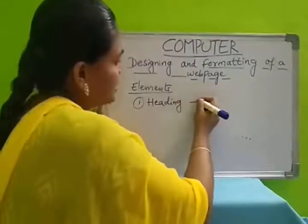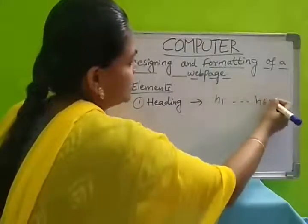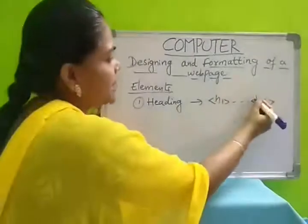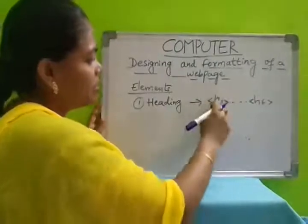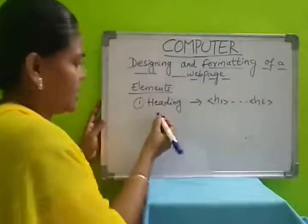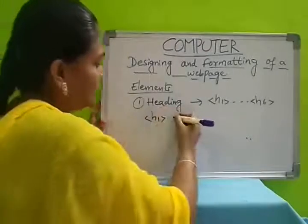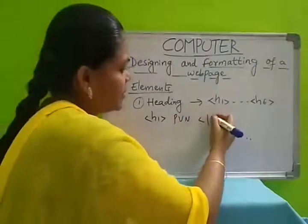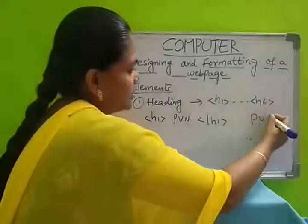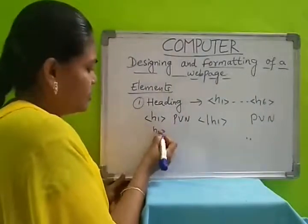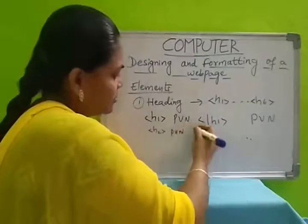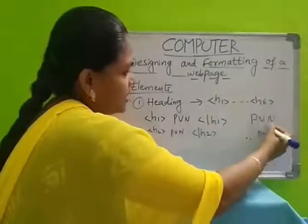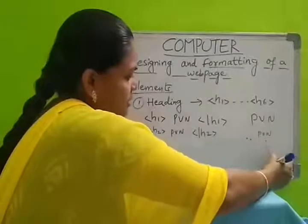In heading we have 6 types of headings — H1 to H6. It is a tag-based language, so we have to keep all these headings in angular brackets, and each heading has an open tag and a closing tag. H1 displays whatever word or sentence you give in the middle in a big size. H2 gives a somewhat smaller size comparing with H1. Like that we get smaller and smaller sizes until H6.